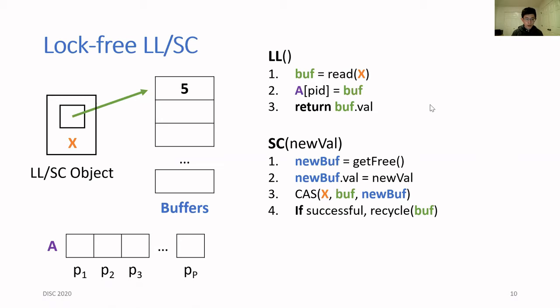In the lock-free algorithm, the LL/SC object stores a pointer to a buffer, and the buffer it points to stores the actual value of the object. To perform an LL operation, you simply read the pointer, and then you would announce the pointer to prevent the buffer from getting collected as you read from it. And then finally, you would complete the operation by reading the buffer and returning its value.